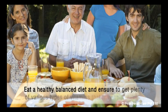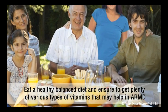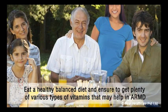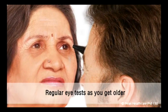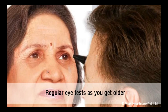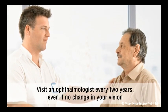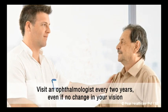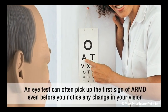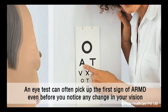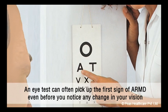Eat a healthy, balanced diet and ensure to get plenty of the various types of vitamins that may help in ARMD. Consider regular sight tests as you get older. You should visit an ophthalmologist every two years, even if there is no change in your vision. An eye test can often pick up the first sign of ARMD even before you notice any change in your vision.